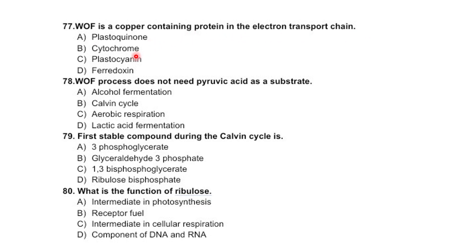Which of the following is a copper-containing protein in the electron transport chain? Plastoquinone, cytochrome, plastocyanin, or peridoxin — correct option is plastocyanin. Which of the following processes does not need pyruvic acid as a substrate? Alcohol fermentation, Calvin cycle, aerobic respiration, or lactic acid fermentation — correct option is Calvin cycle.